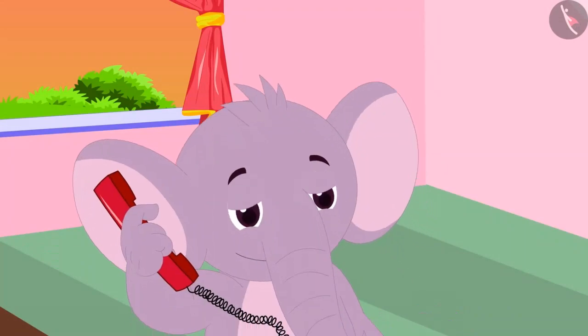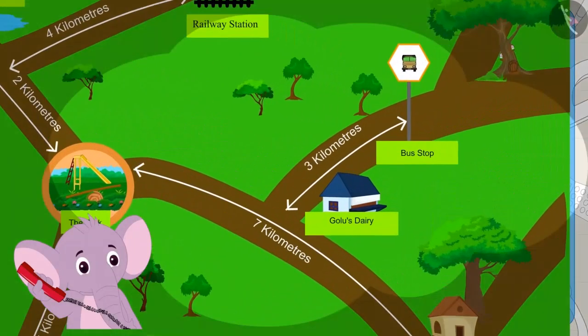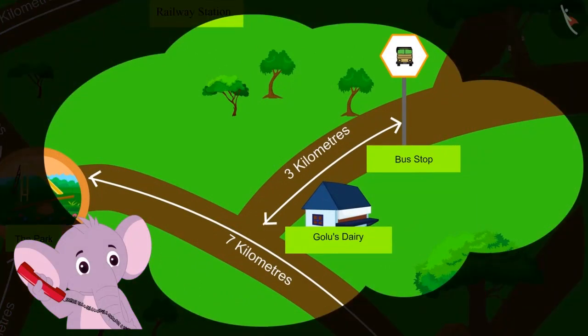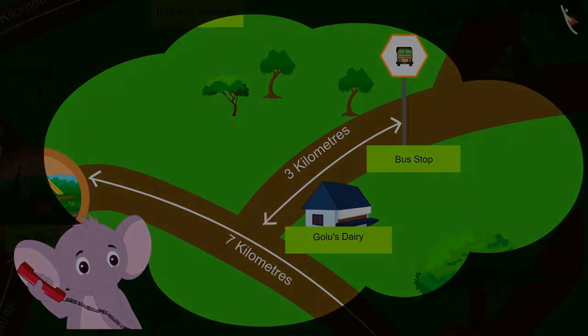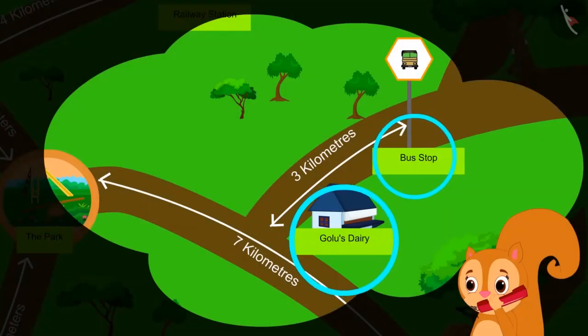Appu told Chanda, Look, can you see Golu's dairy on the map? The dairy is three kilometers away from the bus stop. Chanda quickly noticed the places on her map and also saw the distance written between them.